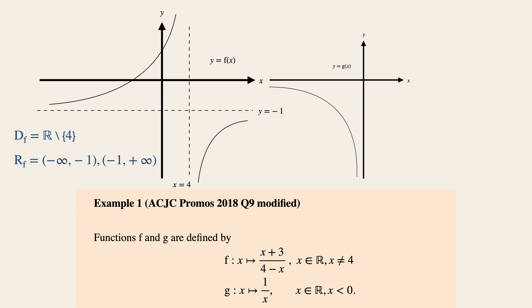For the domain of g, it equals negative infinity to 0, and the range of g equals negative infinity to 0, or all the negative real numbers.